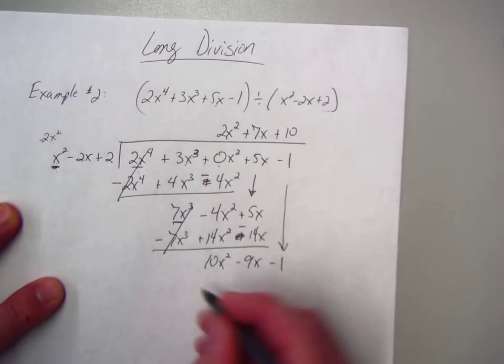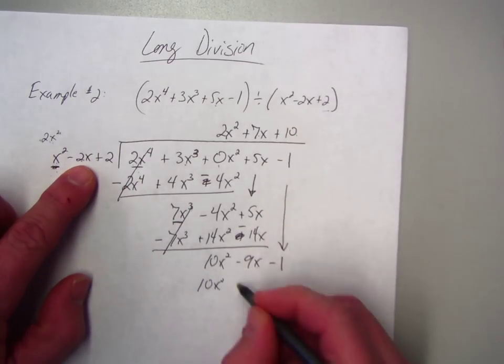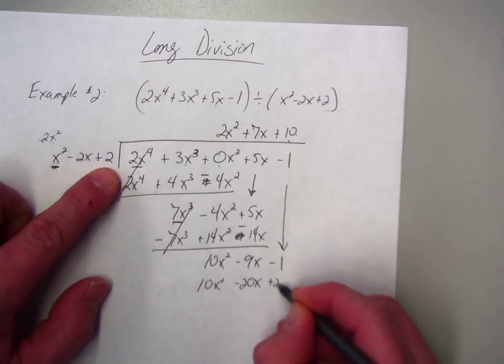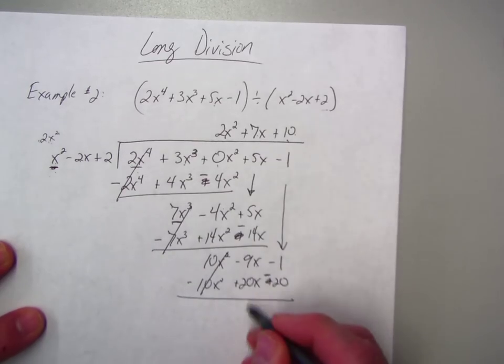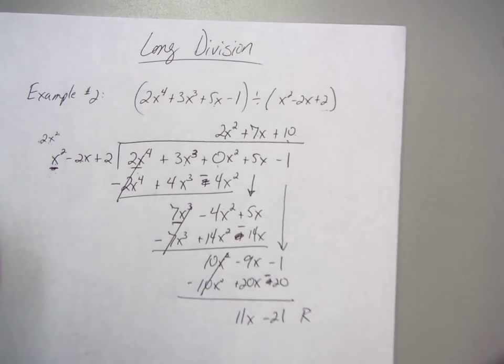So, here I must multiply by 10. So, it gives me 10x squared. 10 times this is negative 20x. Plus 20. Change the signs. That goes to 0. I'm left with 11x minus 21. So, the rest right here is my remainder.